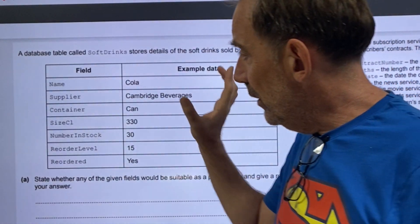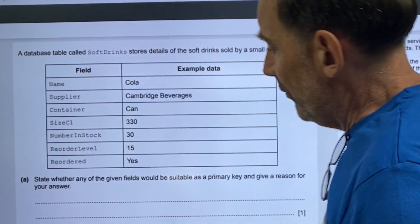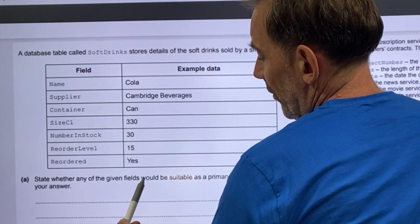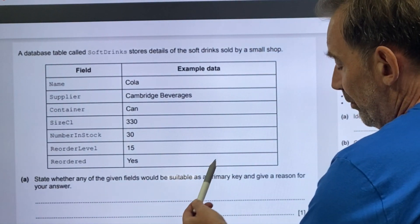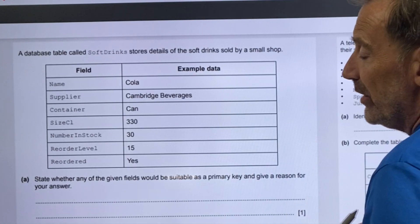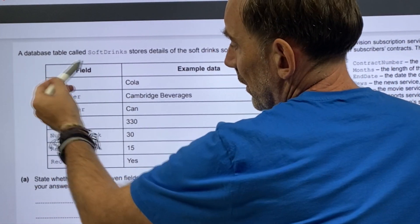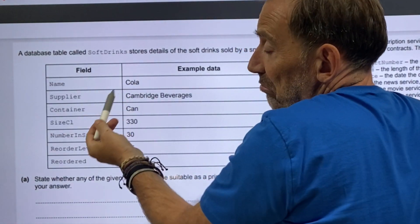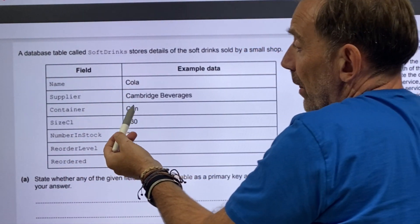Looking at this table here, it says for question 8, state whether any of the given fields would be suitable as a primary key and give a reason for your answer. Well, looking at this name, it could be cola, it could be lemonade, it could be any number of things.